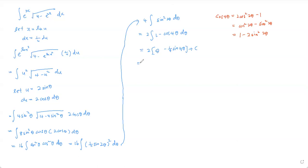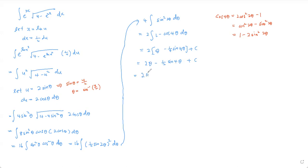Now we bring back x. Since u = 2sinθ, we have θ = arcsin(u/2). The integrated expression is 2θ − ½sin4θ + C. Let's work out sin4θ on the side. We can write sin4θ = 2sin2θ cos2θ, and using sin2θ = 2sinθ cosθ, we expand further.